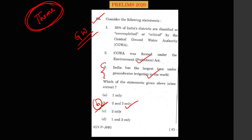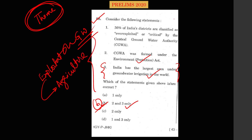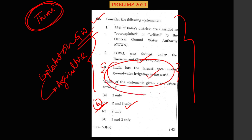This question is basically based on the theme of exploitation of groundwater, and exploitation is happening majorly because of agriculture. So if you want to prepare for the next year after solving this question, it is clear that groundwater irrigation is the main cause of exploitation of groundwater in India. You might then brainstorm what are the crops which are water-intensive, and what are the regions — we know Punjab and Haryana region has groundwater exploitation.